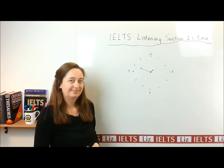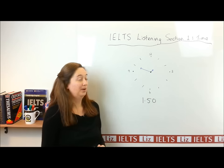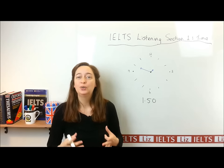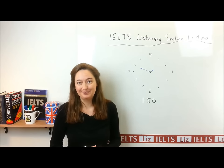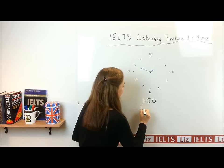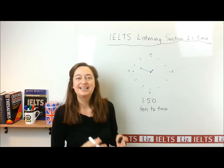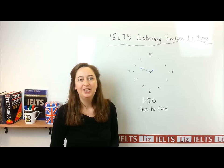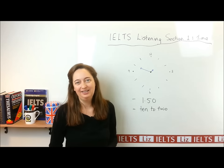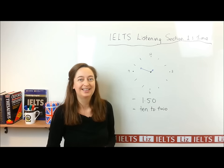What time is it? The time is 1:50. That's quite easy. But in English, there are often two different ways to say the same time. Can you think of another way to say that time? The other way is 'ten to two.' That means 10 minutes before 2 o'clock. So there are two different ways to tell the same time. And in your IELTS Listening Test, IELTS will often try to test you on that and trick you.